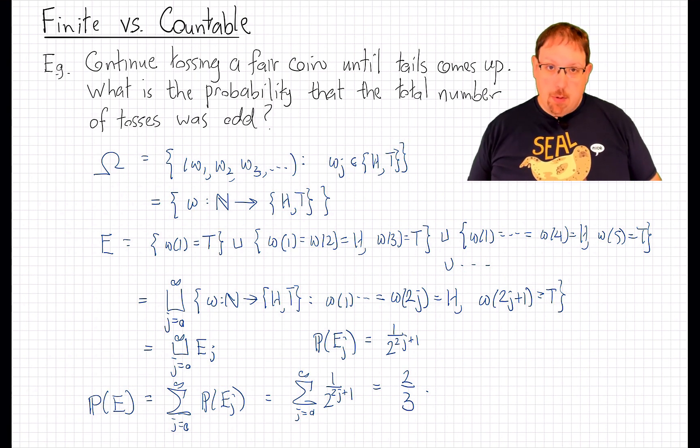Examples like this motivated the founders of probability theory over a hundred years ago to decide that countable additivity was a must-have property for probability measures.